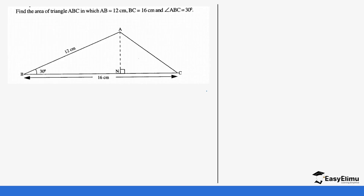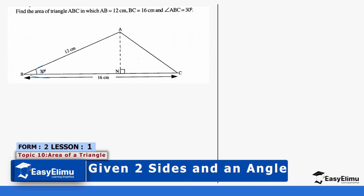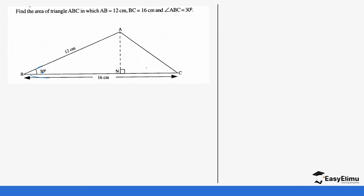Find the area of triangle ABC in which AB is equal to 12 centimeters, BC is 16, and angle ABC is 30 degrees. In this question we are being given two sides and an angle, so we do not need to calculate the height to use half base times height. Instead we will use the formula: a half ab sine theta. So it's going to be a half, a is 12, b is 16, and then our angle is sine 30.